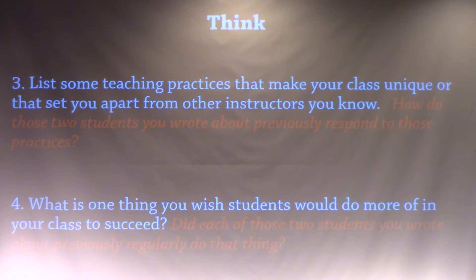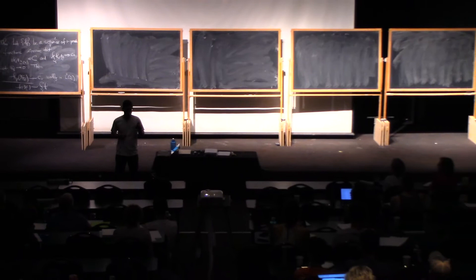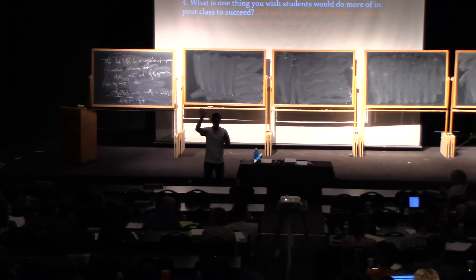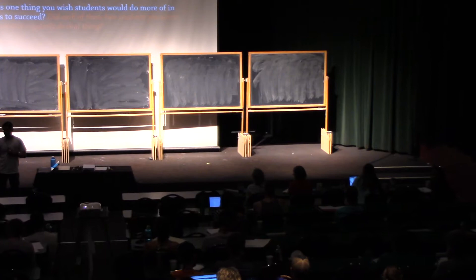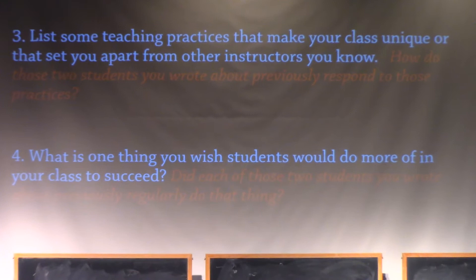Let's take a quick poll. That thing you wished students would do more of to succeed — Student A, the one who belonged: raise your hand if they did that thing. Now Student B, the one who didn't belong: raise your hand if they did that thing. Oh my goodness, I didn't realize it would be this dramatically different — look around the room. That's pretty strong. I've actually never done this before in a group, so I was taking a risk. But it's pretty amazing if you think about it. That one thing you think is so important that you want them all to do — why is it that certain students aren't doing those things? It really matters, doesn't it?